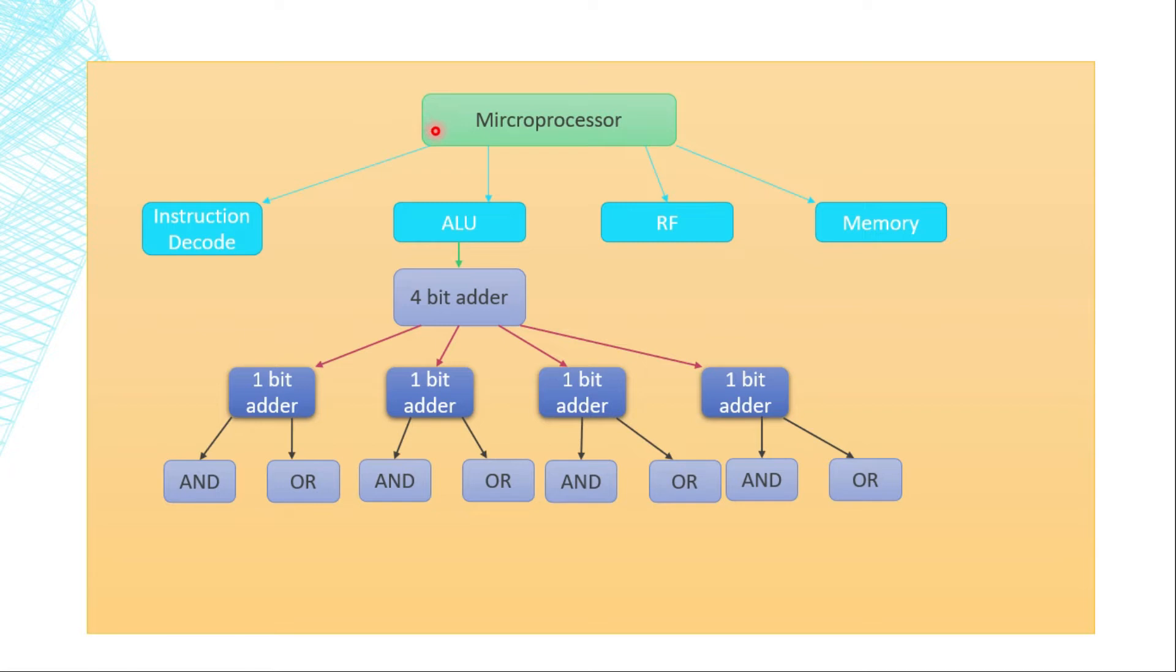Let's consider a microprocessor, a complex design. This microprocessor can be divided into the instruction decode part, ALU part, and the register file part, and also the memory. ALU may need an adder, and if it is a 4-bit ALU, you need a 4-bit adder. A 4-bit adder needs a single-bit adder. We divide a 4-bit adder into 1-bit adders. And finally, we divide these 1-bit adders or full adders to AND and OR gates.